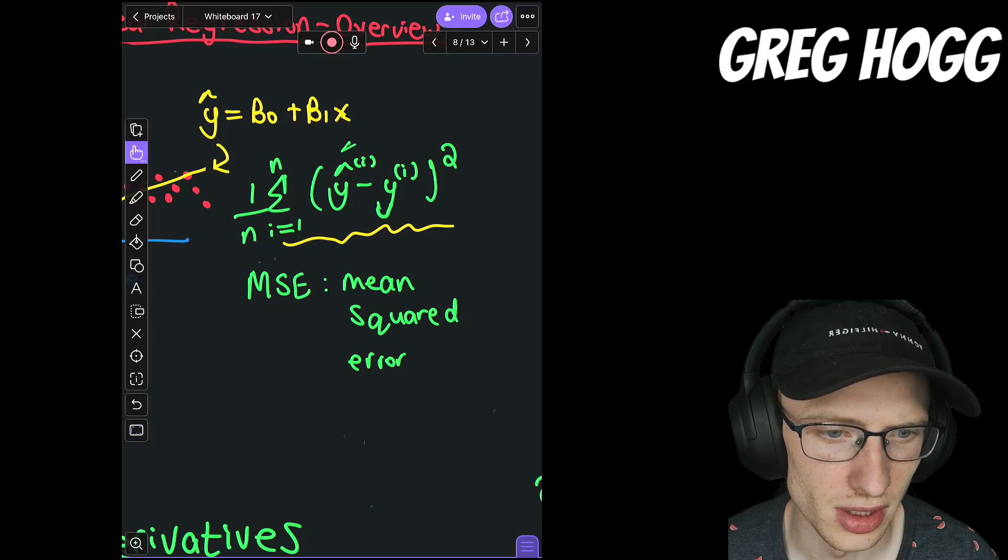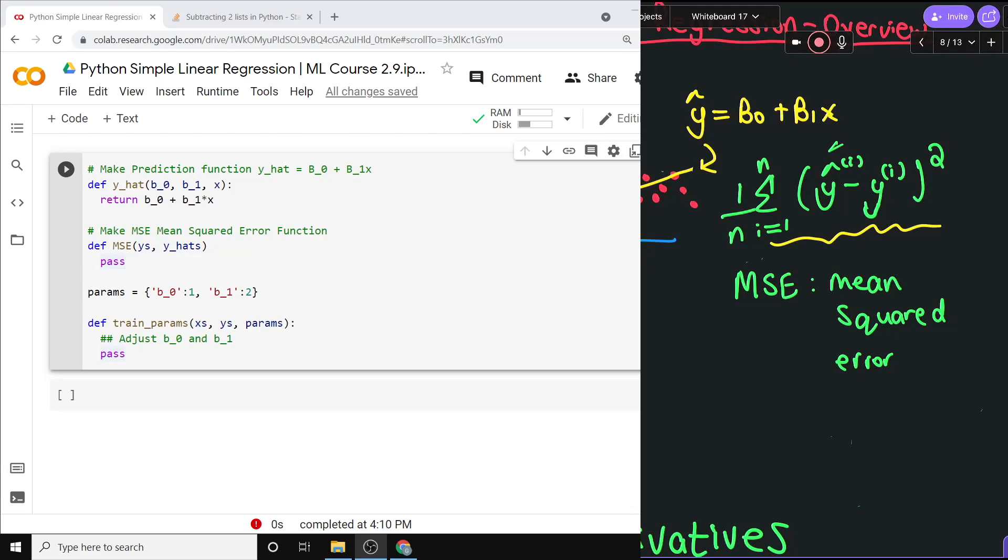So basically, we have the MSE is 1 over n times the sum, as i goes from 1 to n, of the predictions, so y hat i minus yi squared.